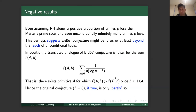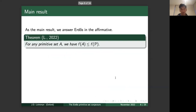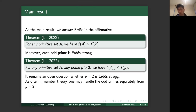Despite this cautionary evidence, as the main result I'd like to answer Erdős in the affirmative: for any primitive set A we have f(A) ≤ f(𝒫). In other words, using f as a measure of size, the primes are maximal among all primitive sets. Moreover, using these proof techniques we were able to show that every odd prime is Erdős-strong — namely, for any primitive set A and any prime p ≥ 3, f(A_p) ≤ f({p}).